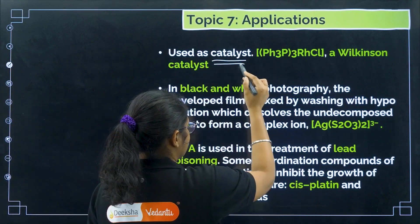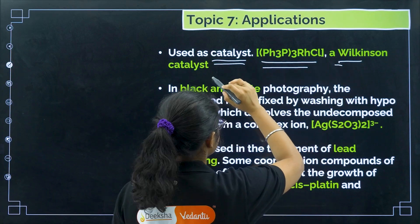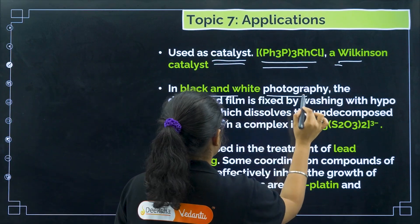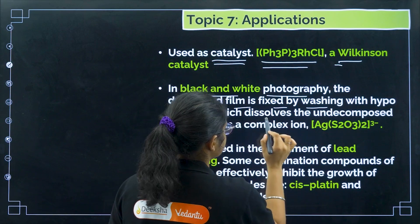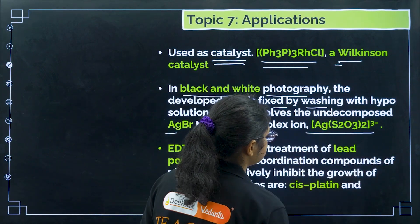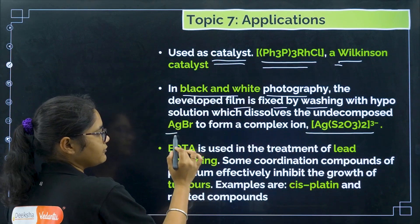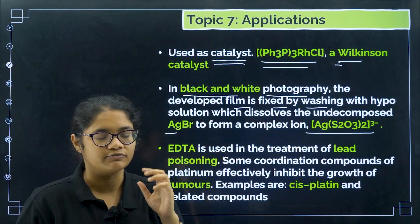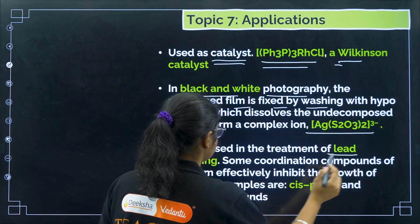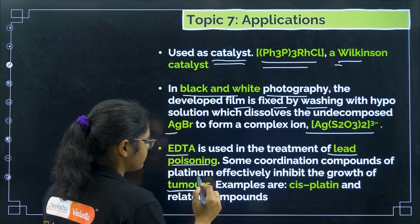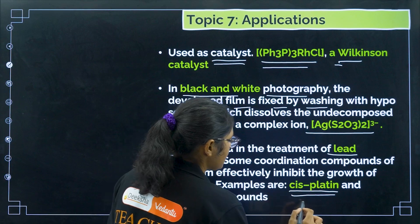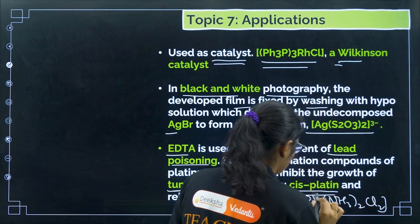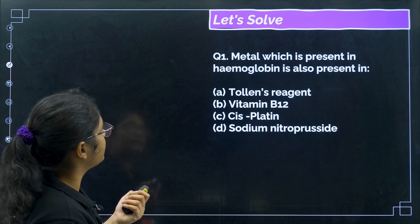Coordination compounds are also used as catalysts — for example, Wilkinson's catalyst. In black-and-white photography, the developed film is fixed by washing with hypo solution, which dissolves the undecomposed AgBr as the complex [Ag(S₂O₃)₂]³⁻. EDTA is also used in the treatment of lead poisoning. For treatment of tumors, we have cisplatin, which is a coordination compound of Pt(NH₃)₂Cl₂.